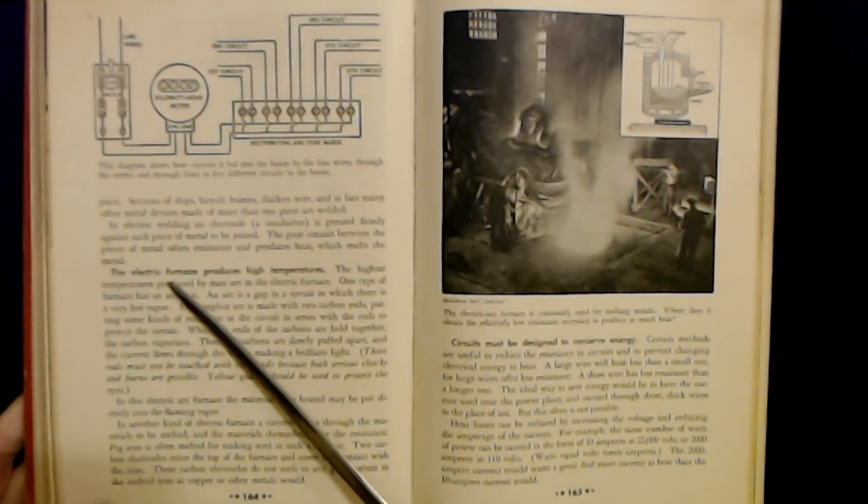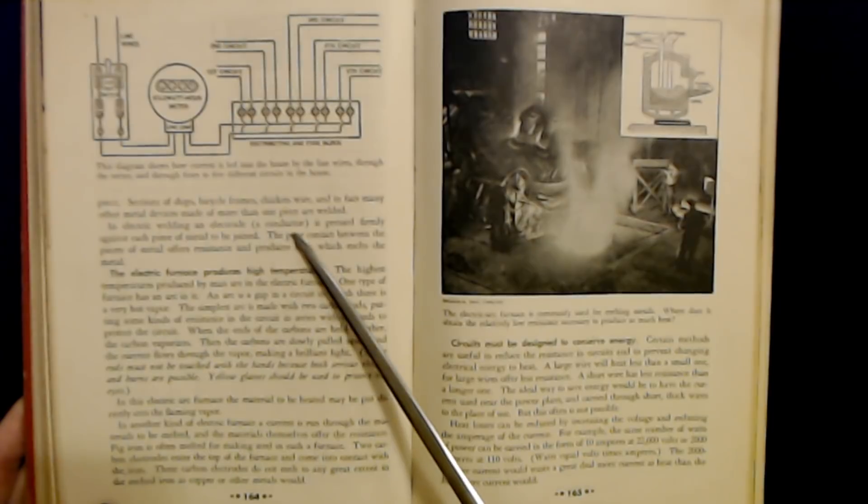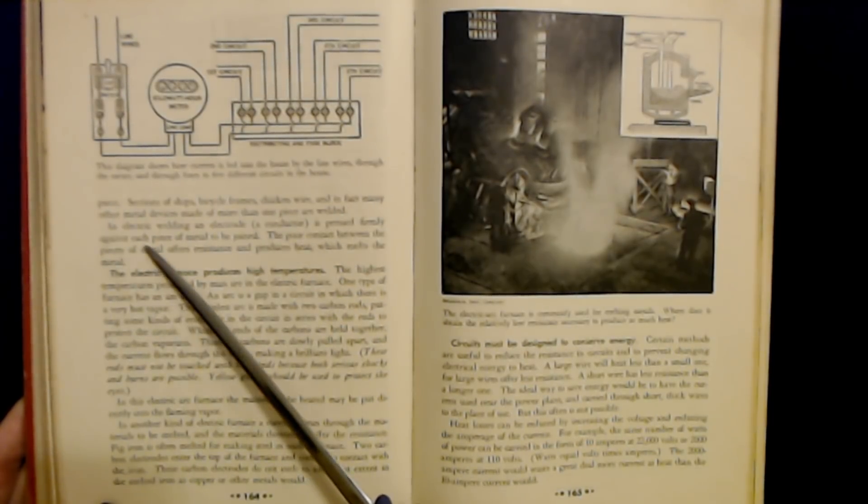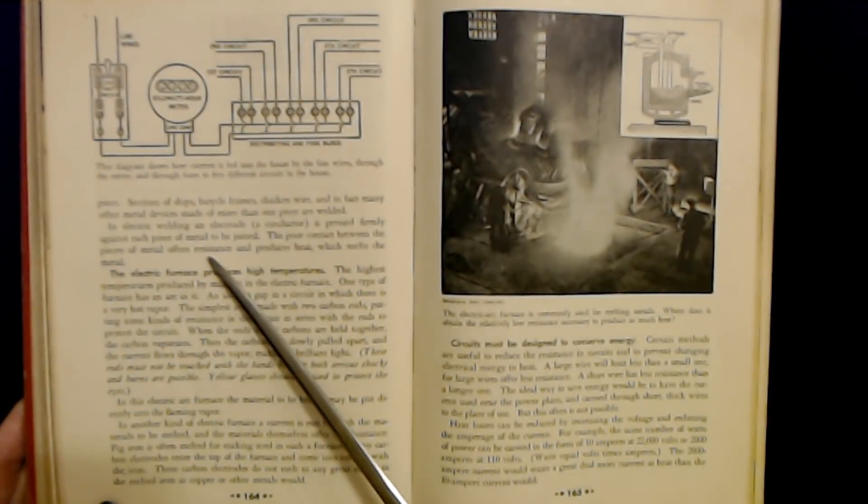In electric welding, an electrode, a conductor, is pressed firmly against each piece of metal to be joined. The poor contact between the pieces of metal offers resistance and produces heat which melts the metal.